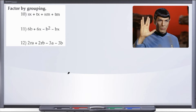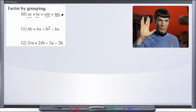As we take a look at questions 10, 11, and 12, we are going to be factoring by grouping. You might wonder why I've put a picture of Spock here on the right doing the Vulcan salute. With this salute, this will help you to remember what to do when you are going to be factoring by grouping, because we factor by grouping when we have four terms.